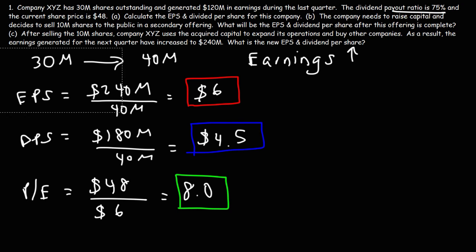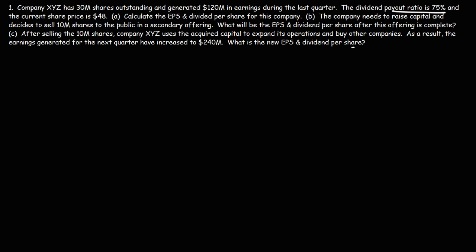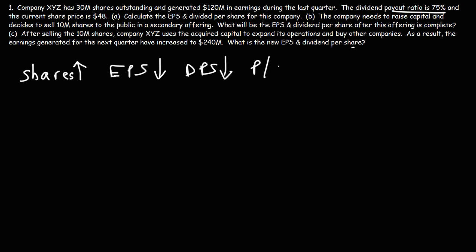Now let's summarize what's happening here. When a company sells more shares and increases the total shares outstanding, if the earnings remain the same, the EPS value goes down, the dividends paid per share goes down, but the P/E ratio goes up. This is not good for investors because they're earning less per share and receiving less in dividends. That's the effect of share dilution on an investor's investment.